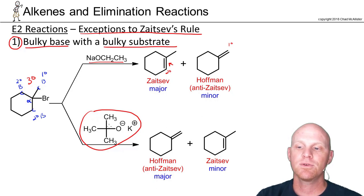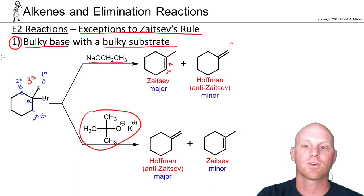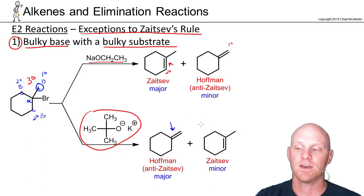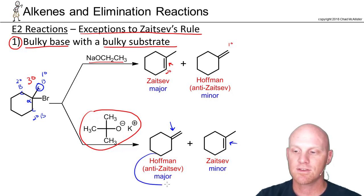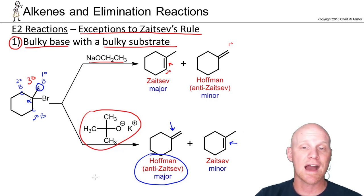But if you use a bulky base, due to its bulkiness it's going to prefer using the least substituted beta carbon — the primary one in this case. That's why the major product is the least substituted alkene. So your Hoffman product ends up being the major product with a bulky base, while the Zaitsev product becomes the minor product.